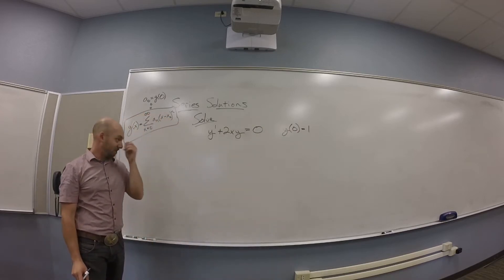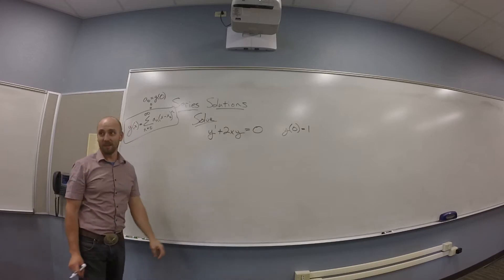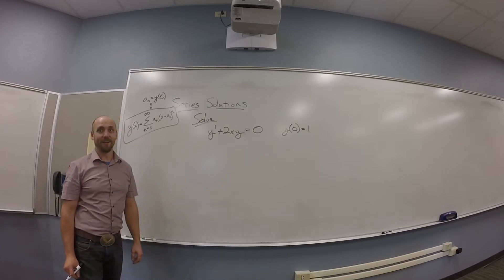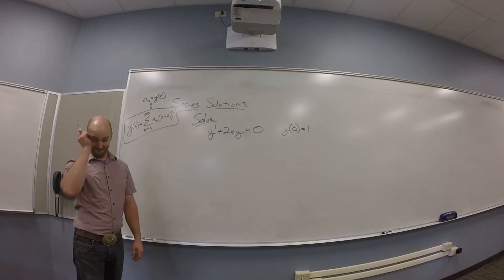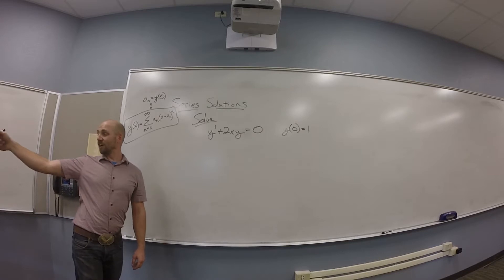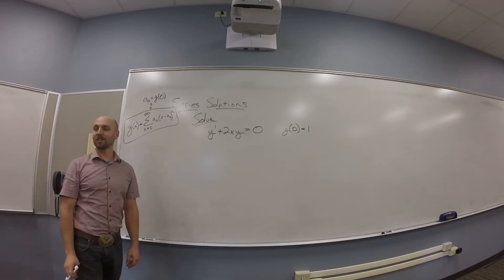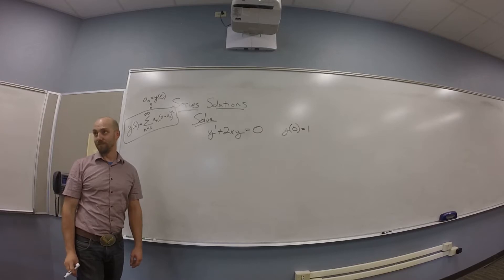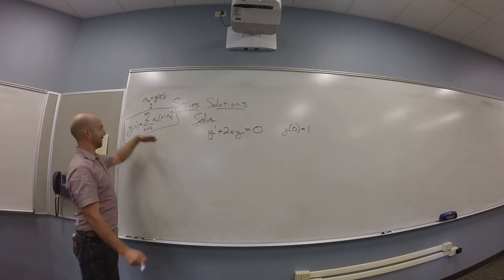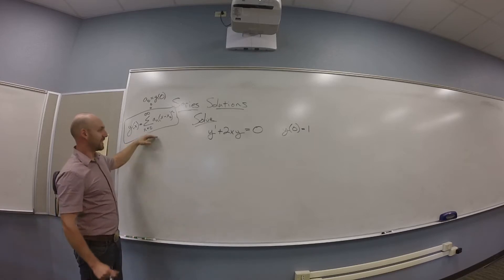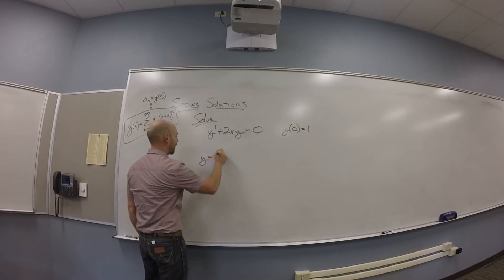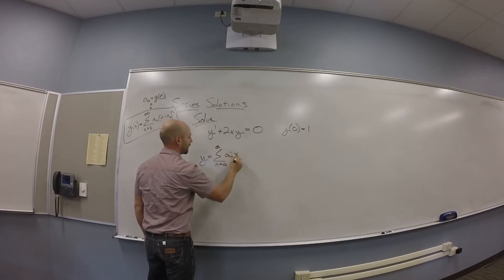Okay, so how does a series approach work? Yeah, this essentially works the same way that variation of parameter says, right? Guess that it has a Taylor series and try to force it. So guess this. I'm going to guess Y is the sum from N is 0 to infinity of A_N X to the N.